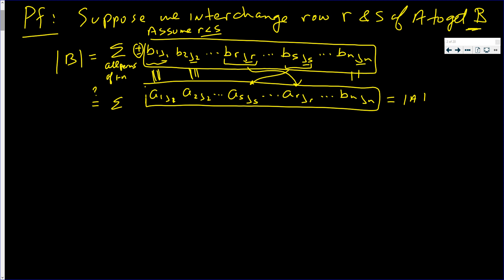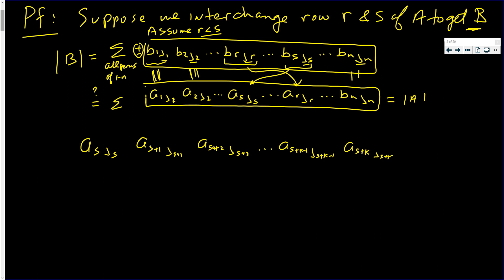We have ASJS and then AS+1,JS+1, then AS+2,JS+2, all the way up to AS+(K-1),JS+(K-1), and then AS+K, JS+K, where S plus K equals R.